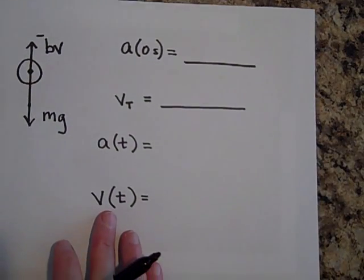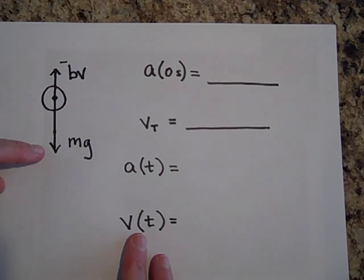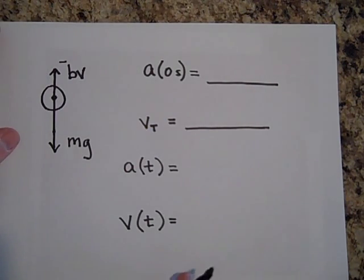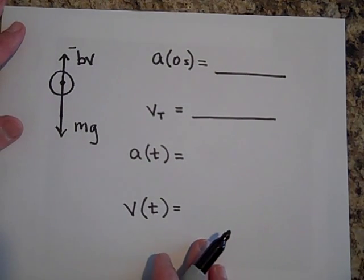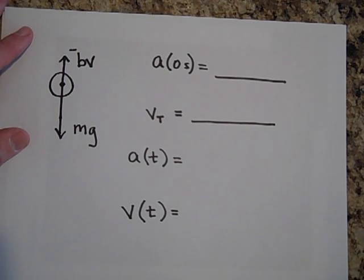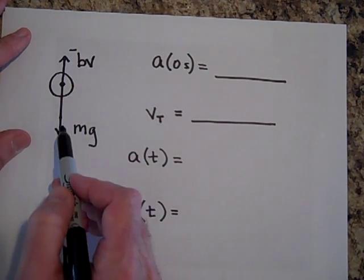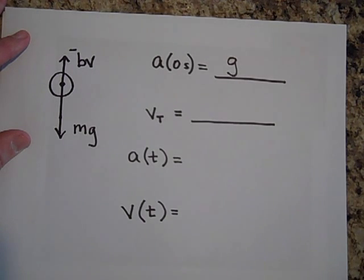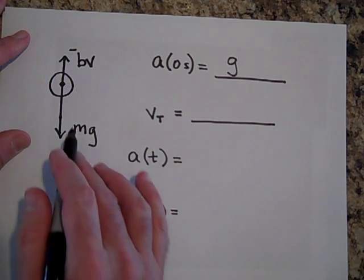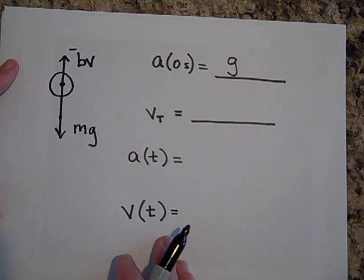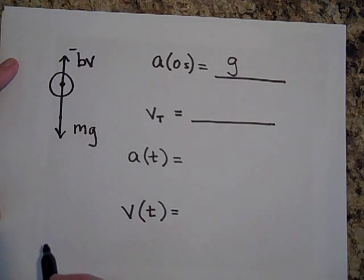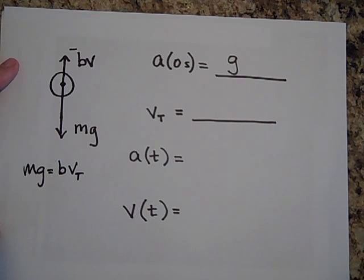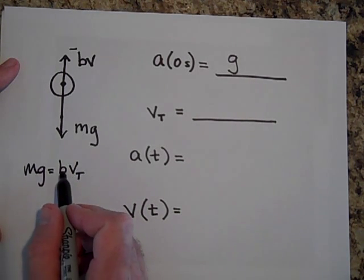If we have an object falling with air resistance, it has weight mg and a resistive force b times v in the opposite direction. At zero seconds, the resistive force is zero because b times zero is zero, so acceleration is just mg over m, which equals g. Terminal velocity occurs when mg equals bv — when the magnitude of mg equals b times v, that v is terminal velocity. Solving for v_t: terminal velocity equals mg over b.